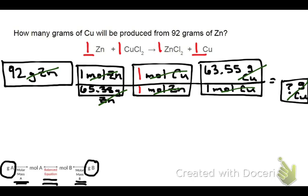Now, my final step is to do what we always do in a problem like this, and that is to multiply all the way across the top. In this case, 92 times 1 times 1 times 63.55. Okay, and then I need to divide by the entire denominator. In this case, it's just 65.38 times 1 times 1. So in other words, I'm dividing by 65.38.